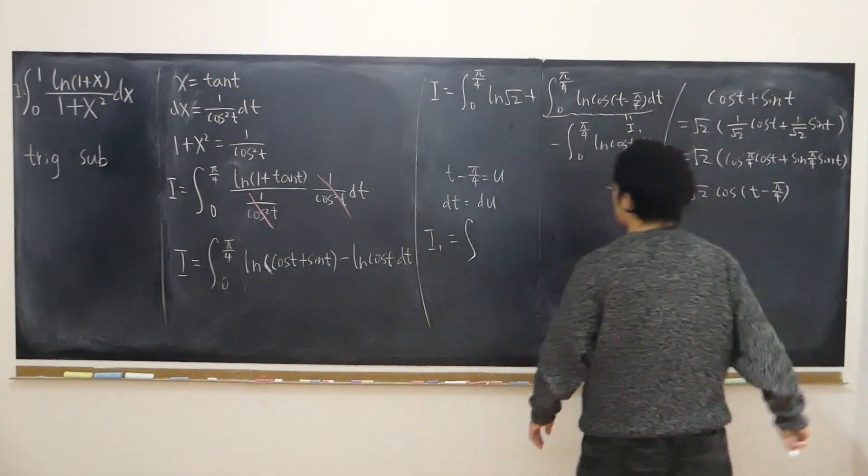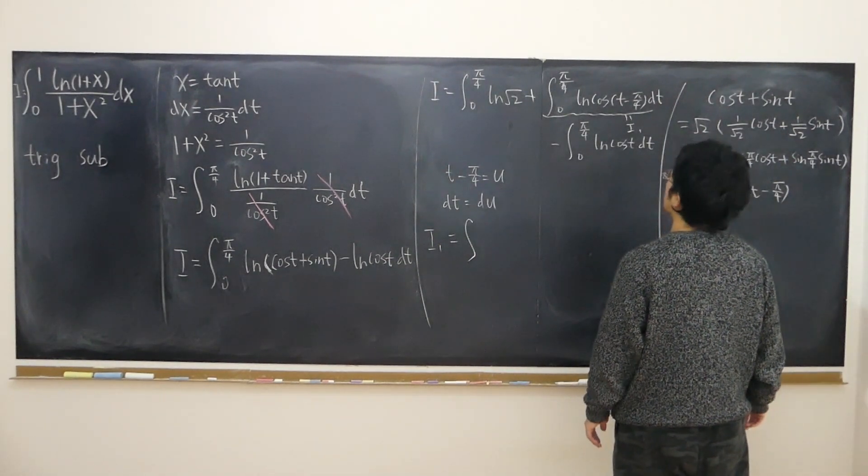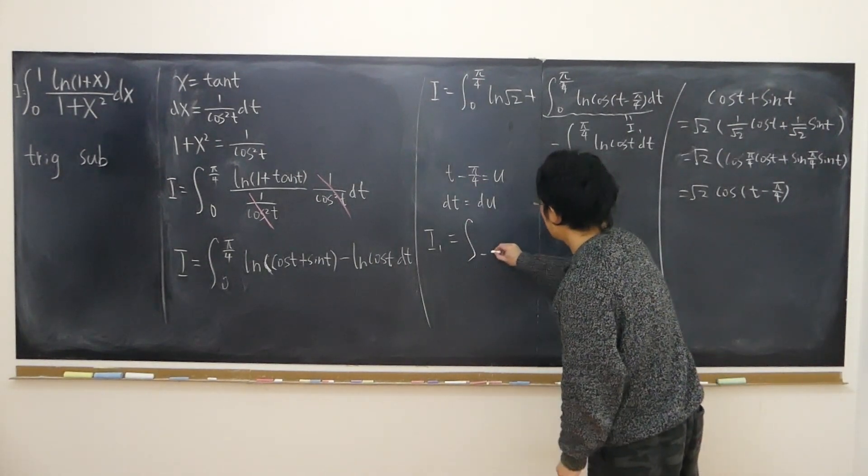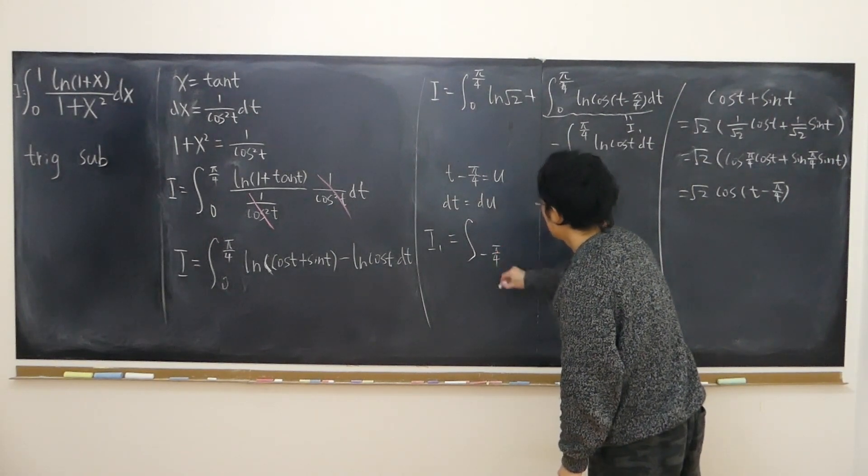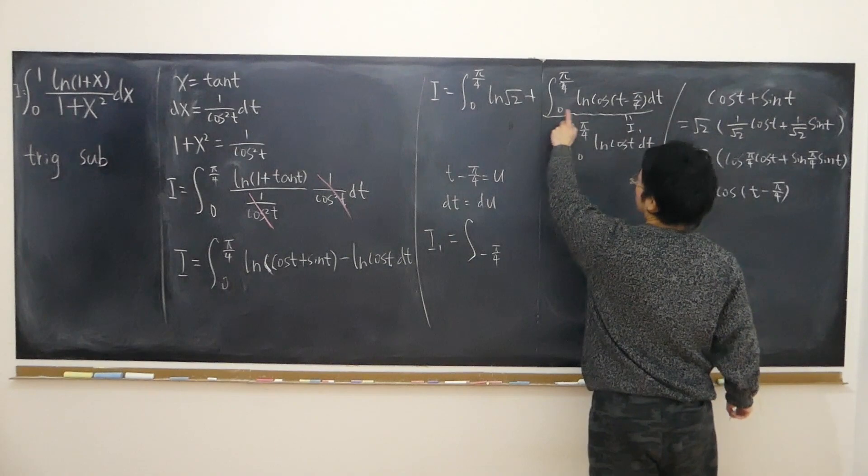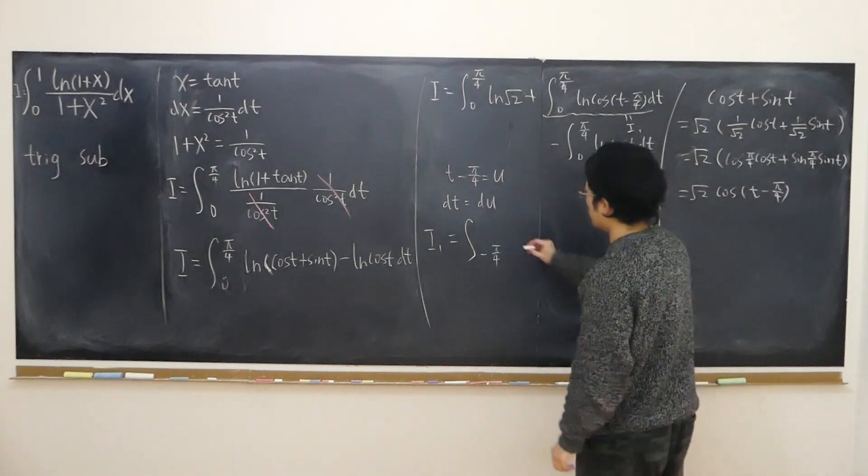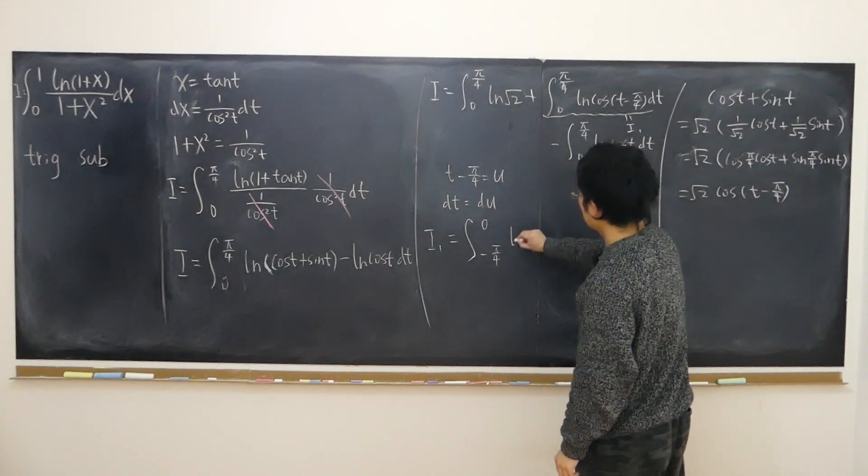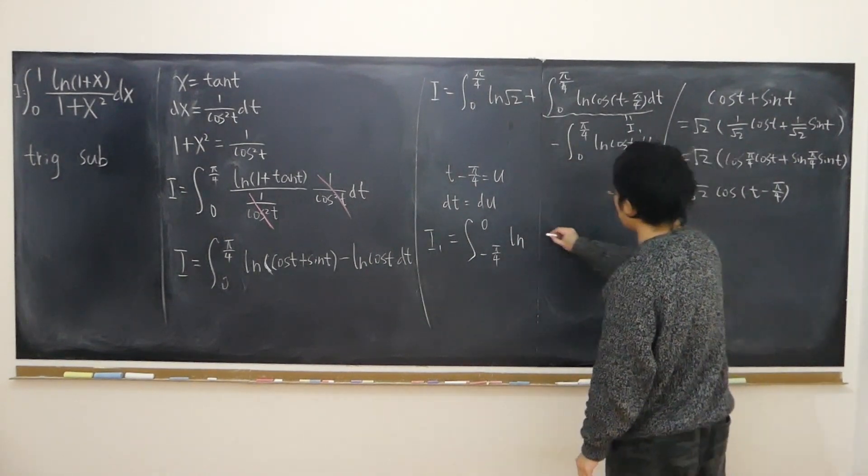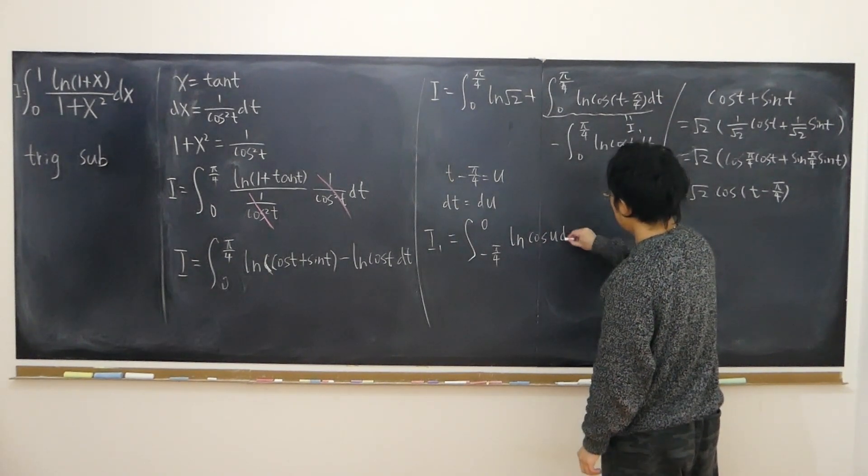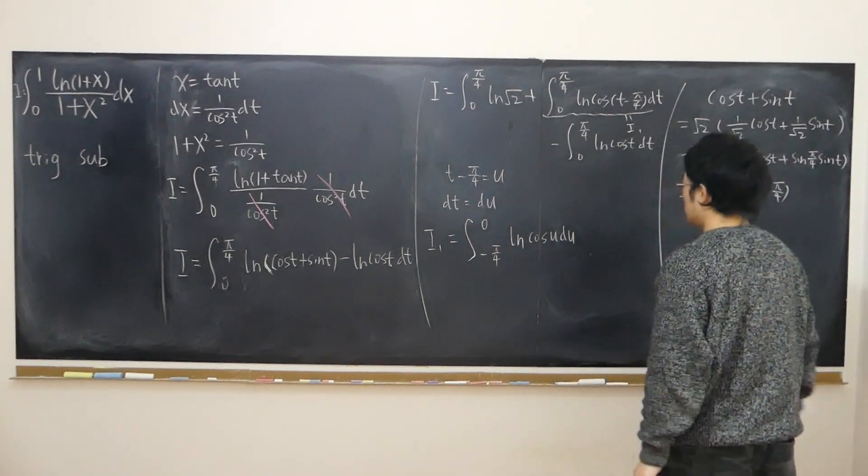Again, change the boundaries. When t is 0, u is minus pi over 4. When t is pi over 4, u is 0. So i1 becomes this log of cosine u du.